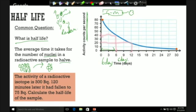Like this, rather than the graph. The activity of an isotope is 300 becquerels. 120 minutes later it had fallen to 75 becquerels. What is the half-life? Well, half of 300 is 150, and then to halve that again we'd get 75. So even though it takes 120 minutes to get from 300 to 75, our half-life would be 60 minutes.